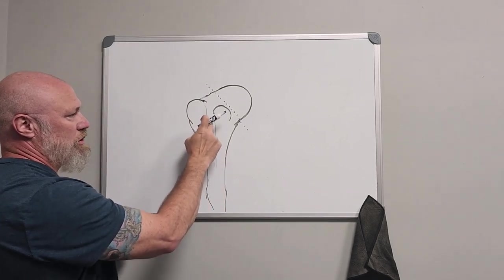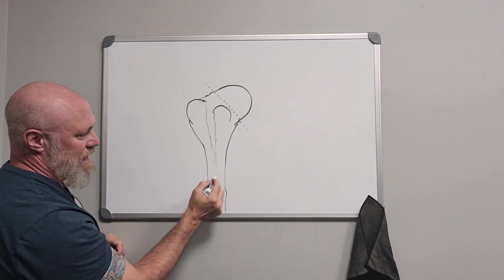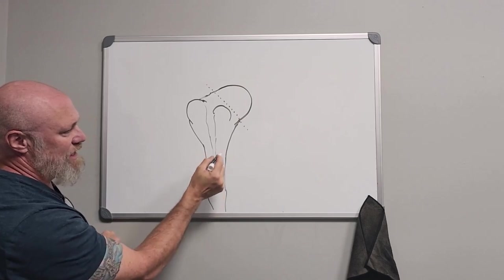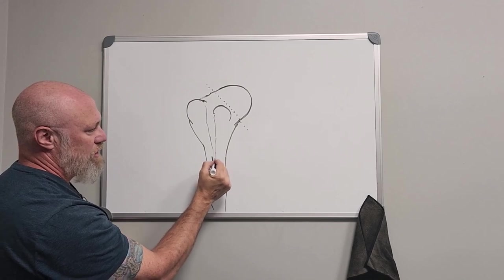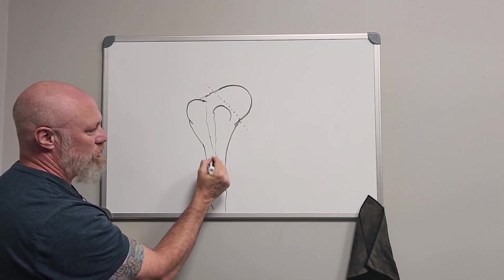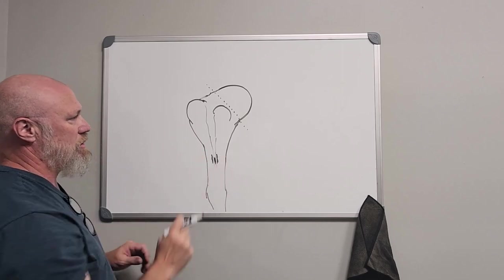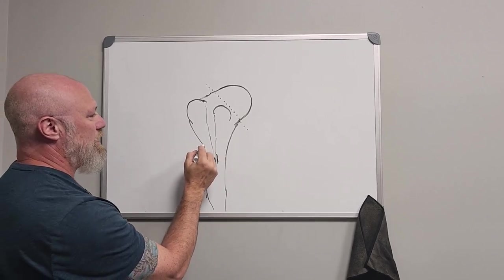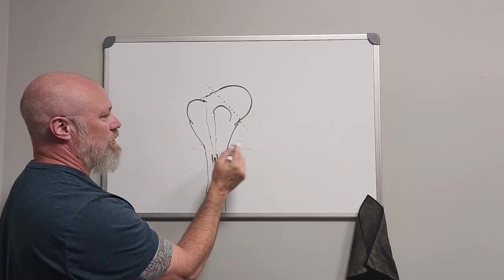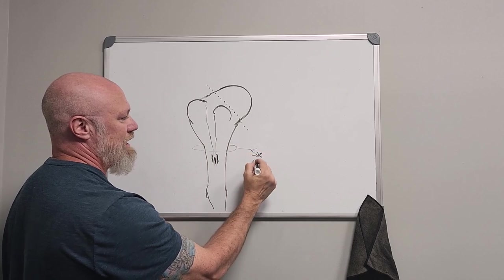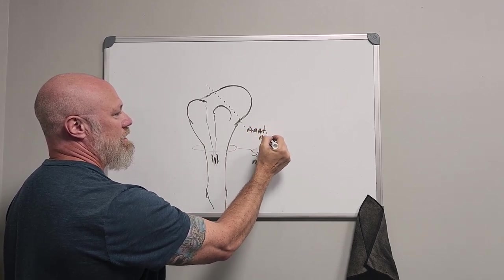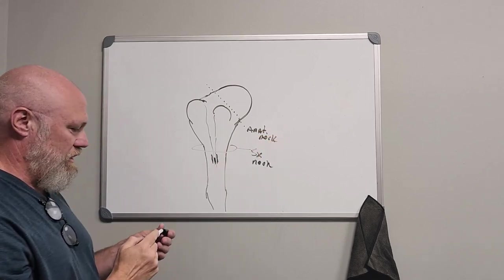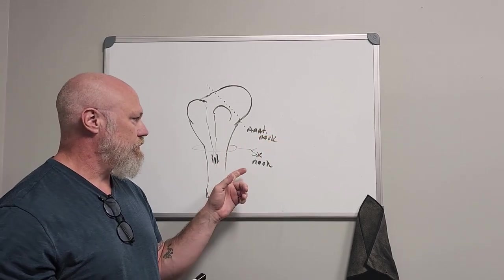You've got this intertubercular groove, and then as it goes down, the intertubercular groove has these lips, this ridge. So it's got the floor and then three edges. I'll talk about that in a moment. And then this part is usually referred to as the surgical neck. Anatomic neck and the surgical neck of the humerus.